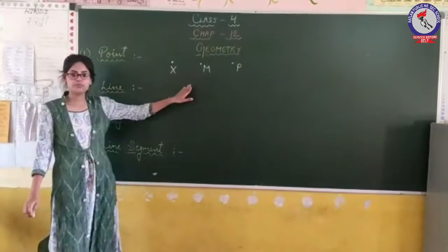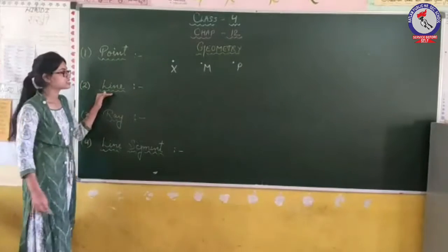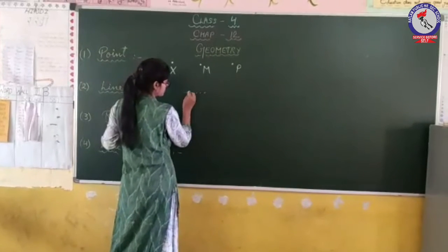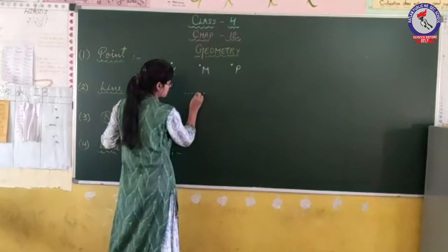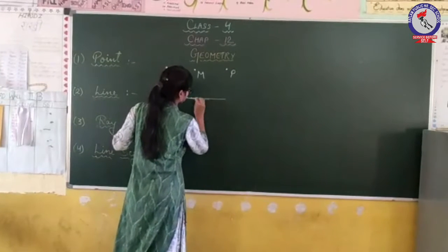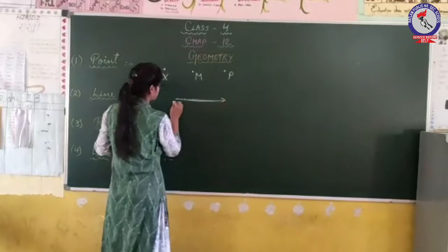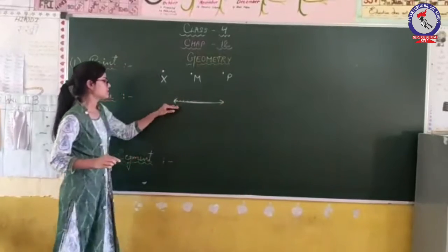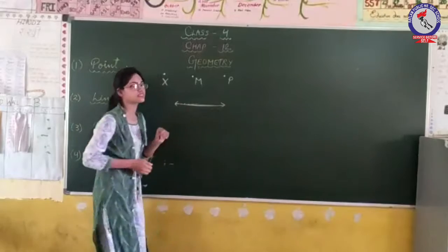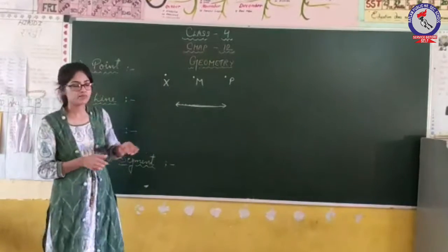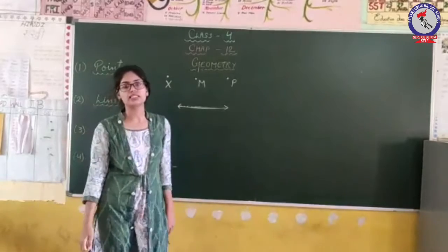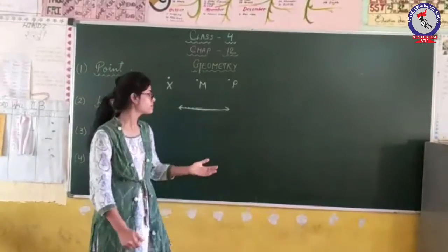Then the second one is line. When we join more points together, we can make a line. A line extends in the same direction infinitely, it extends in both directions.